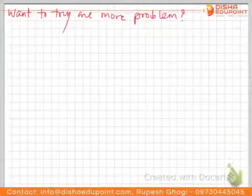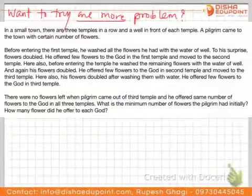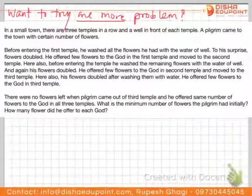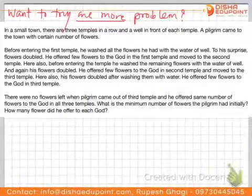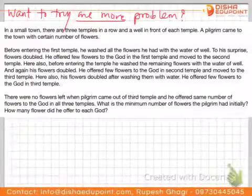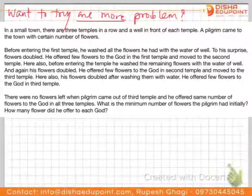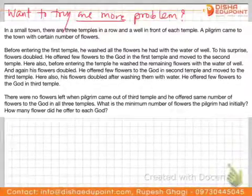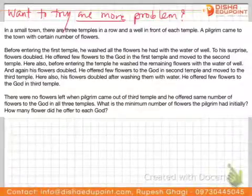Now let's solve one more problem. In a small town, there are 3 temples in a row with a well in front of each. A pilgrim came with a certain number of flowers. Before entering each temple, he washed his flowers in the well and they doubled. He offered the same number of flowers to the god in each temple. After offering flowers at the third temple, no flowers were left. What is the minimum number of flowers the pilgrim had initially, and how many did he offer to each god?